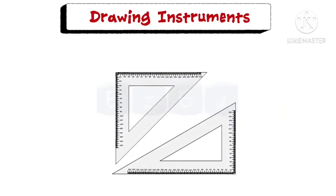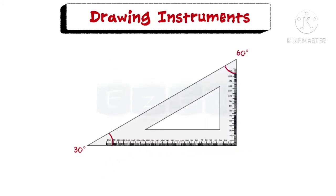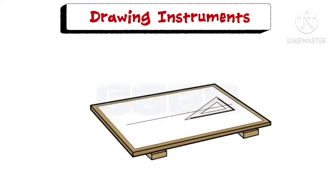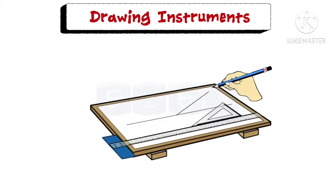Set square is triangular in shape with one of the angles as a right angle. Two forms of the set square are generally used: one having angles 45°, 45° and 90°, and the other 30°, 60°, 90°. Set square in combination with T-square is used to draw lines at an angle.